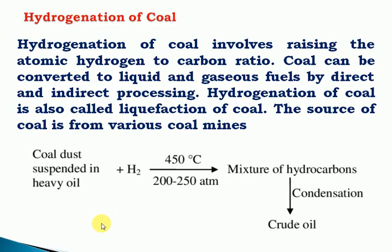Now we will discuss hydrogenation of coal with a Tamil explanation. In coal, there are volatile and organic matter, with carbon present at the maximum percentage and hydrogen at a lower percentage. We will talk about primary fuels or natural fuels and the hydrogenation of coal.